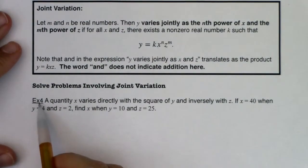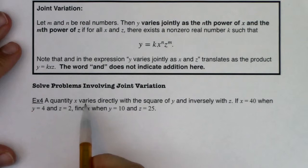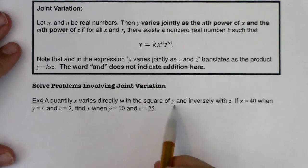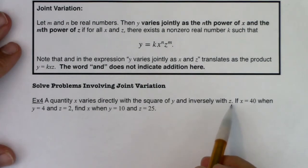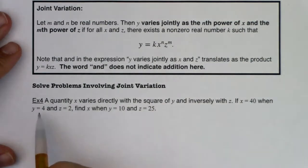Alright, so let's take a look at example four. It says a quantity X varies directly with the square of Y and inversely with Z. If X equals 40 when Y equals 4 and Z equals 2, find X when Y equals 10 and Z equals 25.